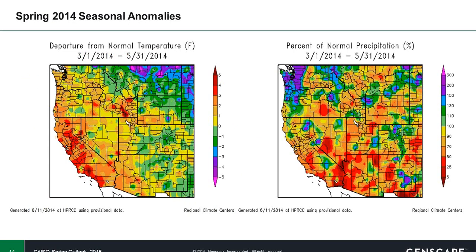Moving into the spring timeframe, we'll take a look back briefly at spring 2014. The story here is that we saw anomalous warmth throughout most of western WEC, indicated by the warm colors in the plot on the left, with the majority of that warmth concentrated in California. The plot on the right shows precipitation as a percent of normal, and we see the above-normal precipitation was generally limited to coastal regions of the Pacific Northwest, with southern WEC and southern California seeing the brunt of the below-normal precipitation conditions.